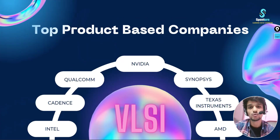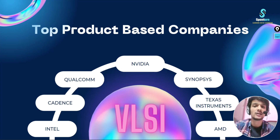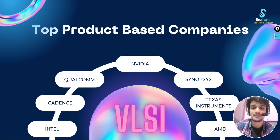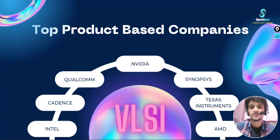I hope you now understand the difference between choosing IT and VLSI. If you have the potential, you should definitely go for the VLSI sector. The top product-based companies in VLSI include Intel, Cadence, Qualcomm, Nvidia, Synopsys, Texas Instruments, AMD, MediaTek, and many more. If you search on Google you will find various companies worldwide.